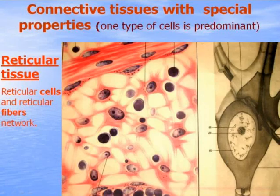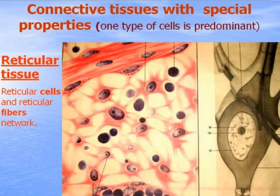Special connective tissues with special properties are located in special organs or places only, and they contain one predominant type of cells. Reticular tissue consists of reticular cells connected to each other by their processes, and reticular fibers. These provide the network — the environment for developing blood cells in organs of hemopoiesis and immunogenesis, like bone marrow, lymph nodes, spleen, and tonsils.